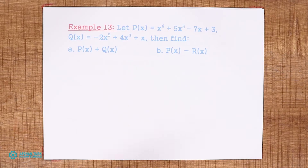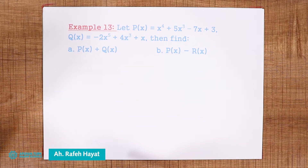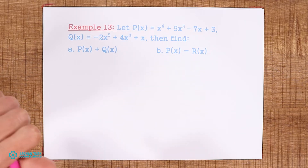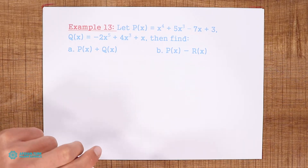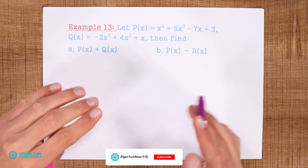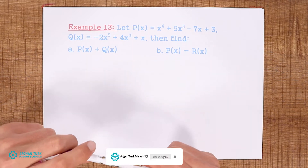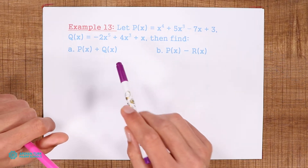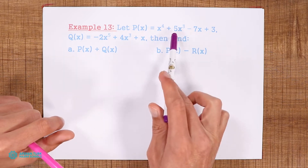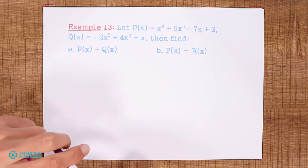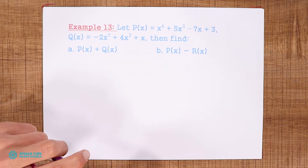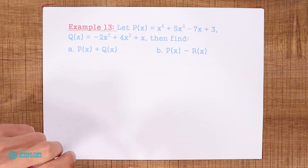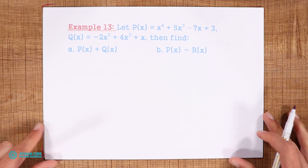Welcome back everyone. We are in addition and subtraction of polynomials. We said that two polynomials can be added if and only if they are like terms, and like terms are the terms with the same variables and same powers of variables. Here we have an example: p(x) and q(x). We need to find the sum and also the difference of them.